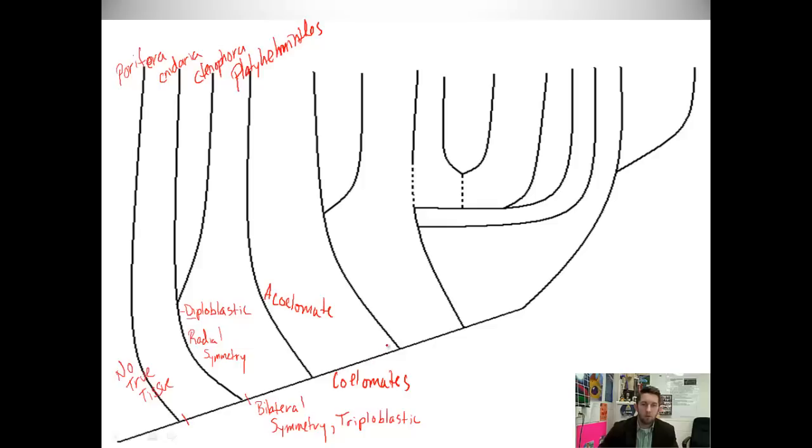We continue on with the coelomates. So, we have some semblance of a coelom until we get here and we reach the pseudocoelomates. So, they have kind of a coelom. Pseudocoelomates. So, they have enough of a coelom that they're not acoelomates, but not have enough of a coelom to continue on. They're pseudocoelomates. And here, we're talking about rotifera, which are the plankton, and nematoda, which are the roundworms, round unsegmented worms.